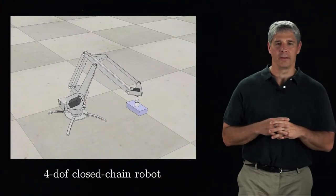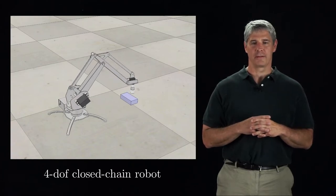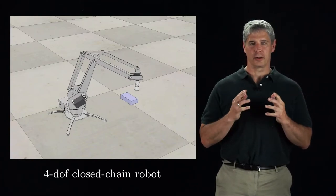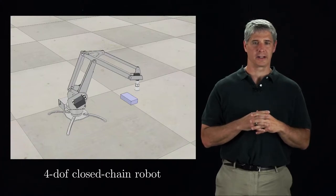Let's start by looking at some examples. The first example is a 4 degree of freedom robot arm. The end effector moves in X, Y, and Z, and it rotates about a vertical axis. Although it looks similar to an open chain robot, it is a closed chain due to the parallelogram type linkage.